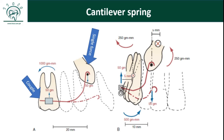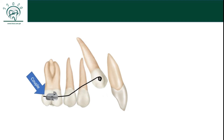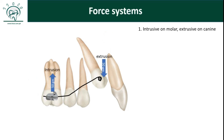Let's assume you want to bring this canine into the arch. You place a lingual button on the canine and a buccal tube on the molar, using heavy rectangular wire to make a cantilever spring. When you activate this wire, there is creation of couple at the molar and the canine receives a single force. You can see that the canine receives an extrusive force while the molar receives an intrusive force — a result of Newton's third law: every action has an equal and opposite reaction. This is the first response: intrusion of the molar and extrusion of the canine.